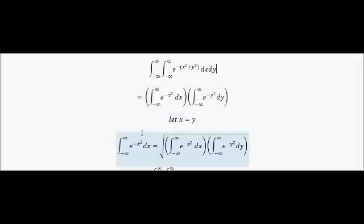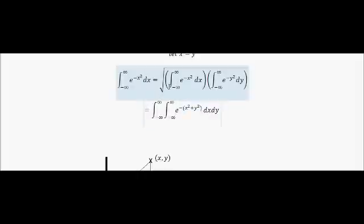Now if we let x equal y, then the factored double integral is equal to the square of the integral of e to the minus x squared from minus infinity to infinity. It might sound an odd way of doing it — I've just let x equal y so both variables are x. The reason is I'm going to use the double integral to evaluate this thing by transforming the xy space into a different space. So I need it in this form.